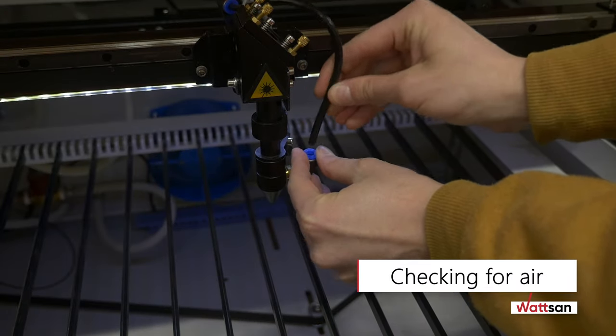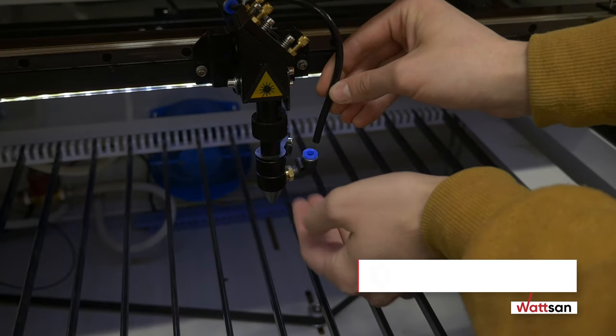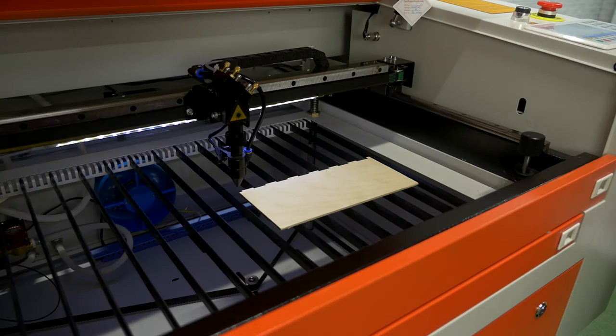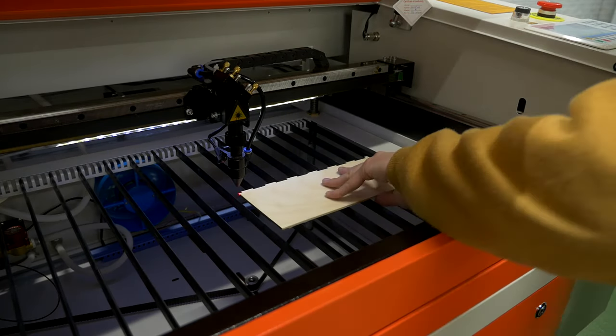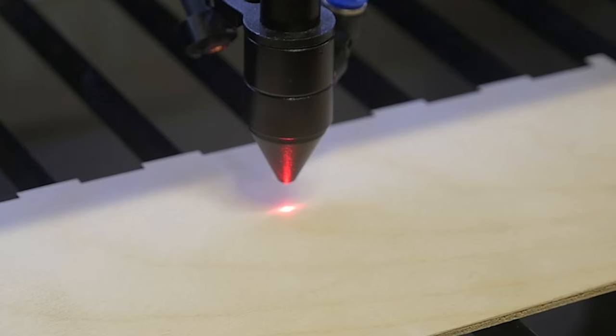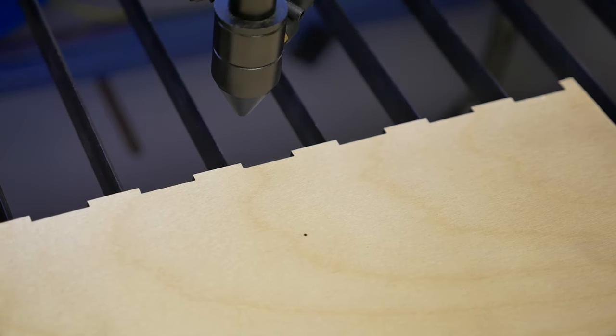Checking for air. Next, you should make sure that there is laser radiation. To do this, put a piece of plywood under the laser head and press pulse. Check whether there is a puncture at the junction of red wires and if the beam comes out and the tube is working properly.